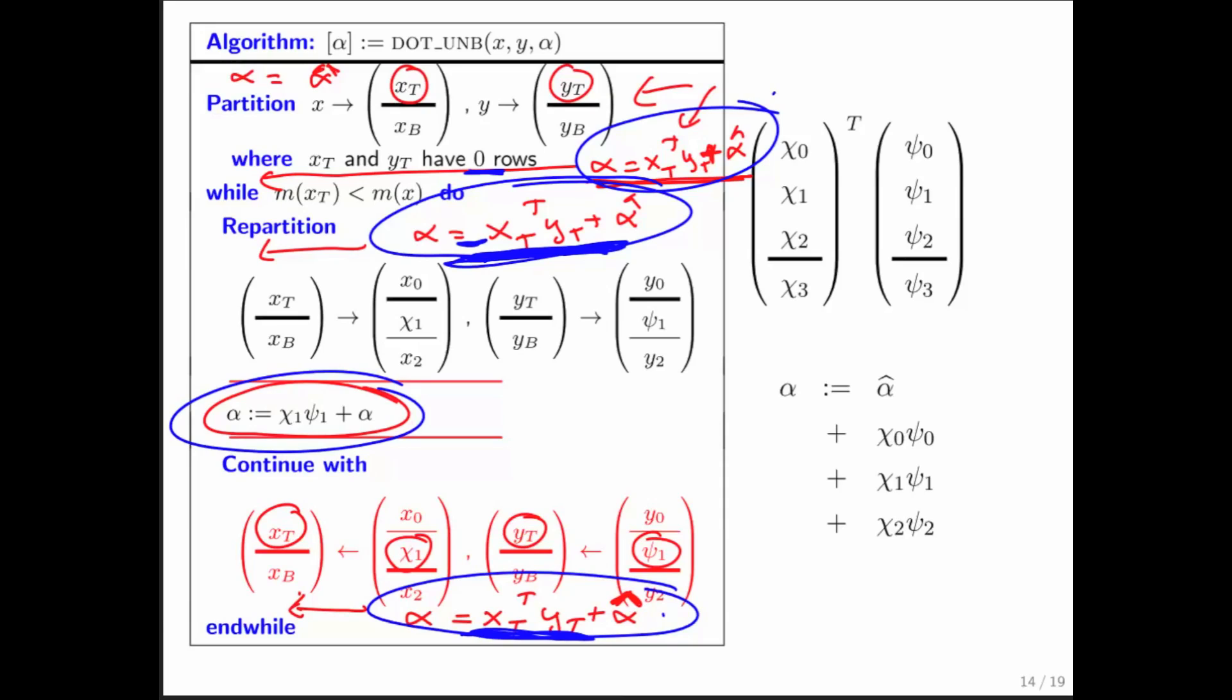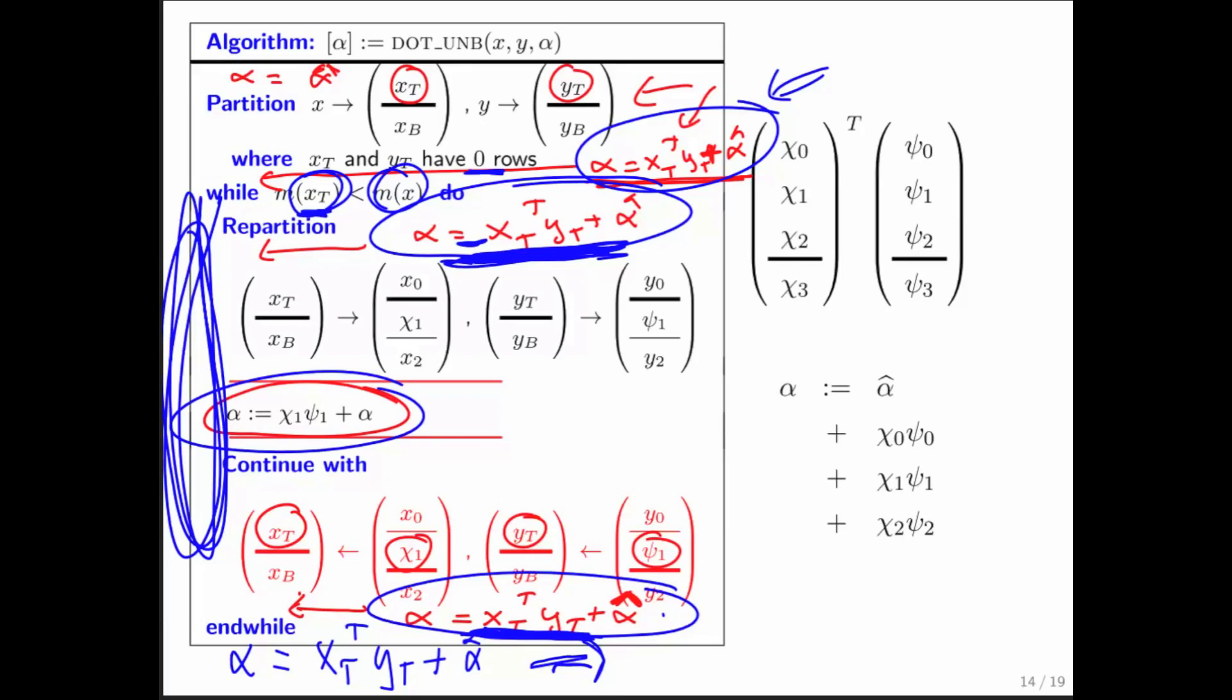So what do we have? If we can prove that this is the content of alpha here, and we can prove that if it's true at the top of the loop, it's again true at the bottom of the loop, then by mathematical induction, every time we go through the loop, we know that this is true. Therefore, it's true that alpha is equal to x top transpose y top plus alpha hat when we finish the loop. But notice that when we finish the loop, x top is all of x. And therefore, y top is also all of y because it's marching through the vector y the same way. What we can therefore conclude is that because this is true when the loop finishes, we know that when the loop finishes, alpha contains x transpose y plus alpha hat. And this loop is correct.